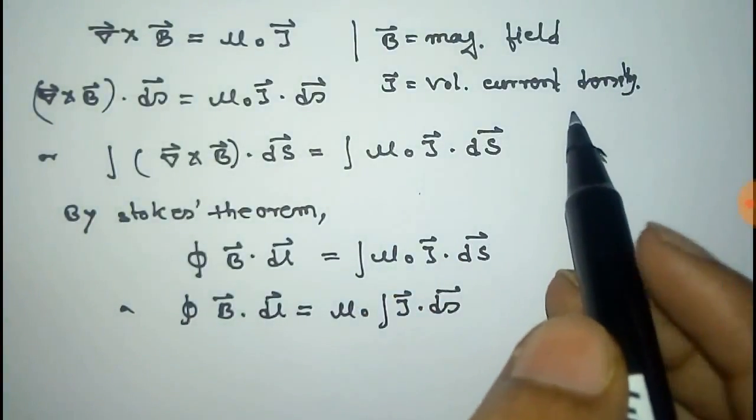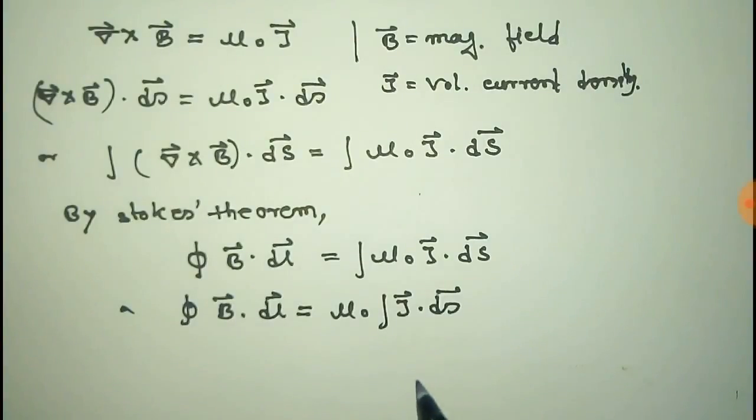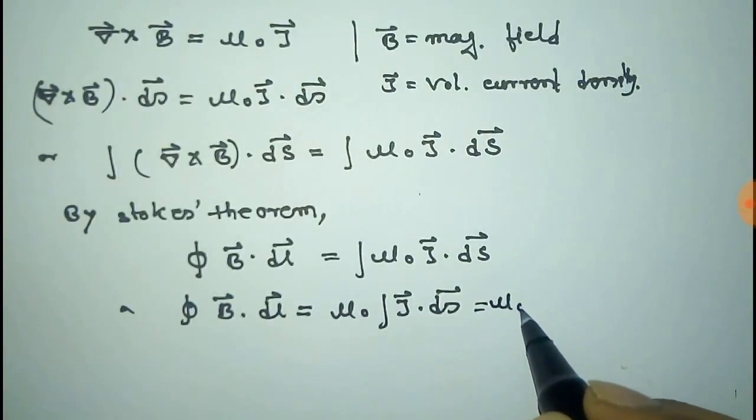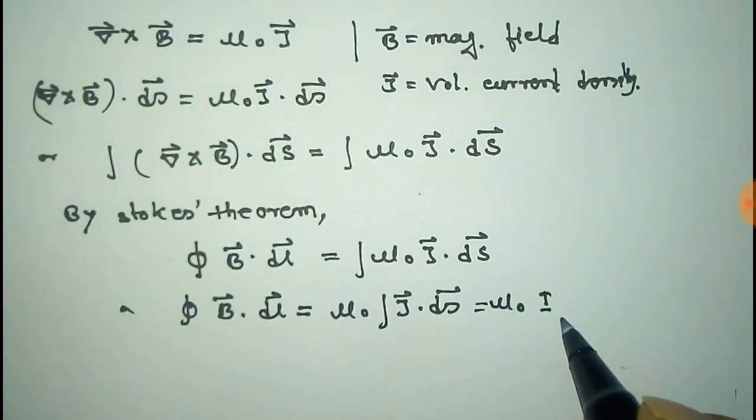Here J is the volume current density. So you can write integral J dot ds as the current, that is i. So this is μ₀ i.